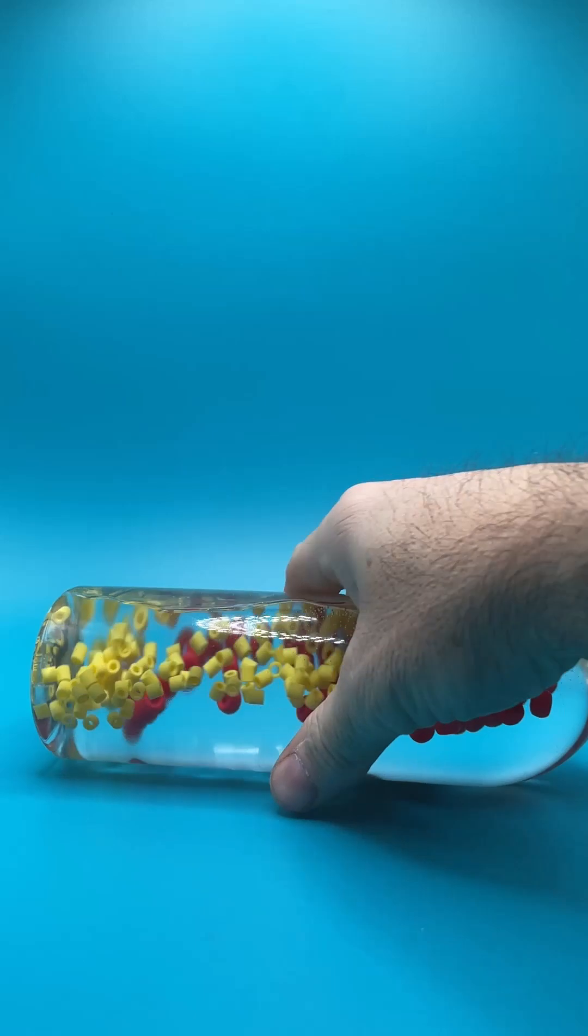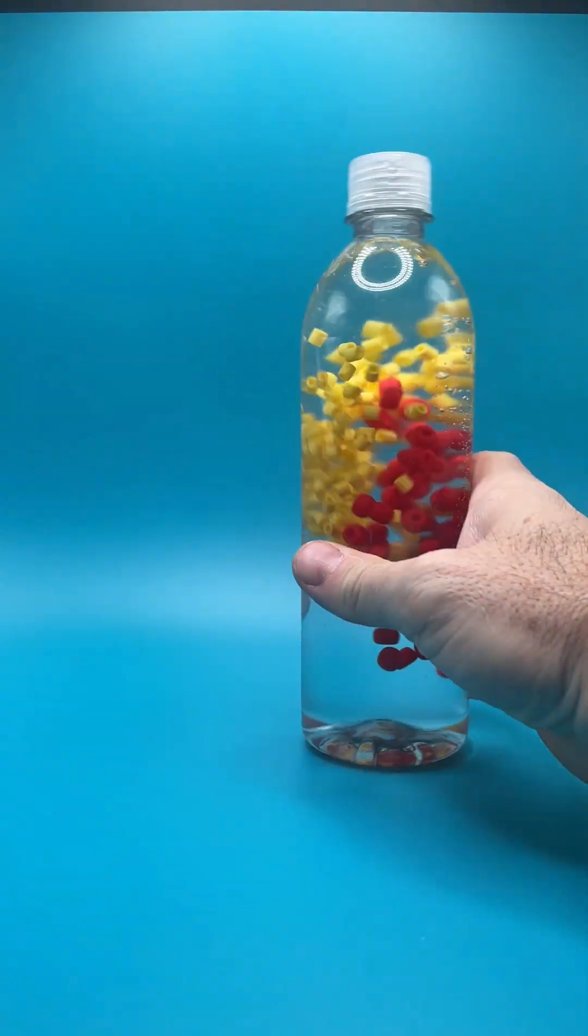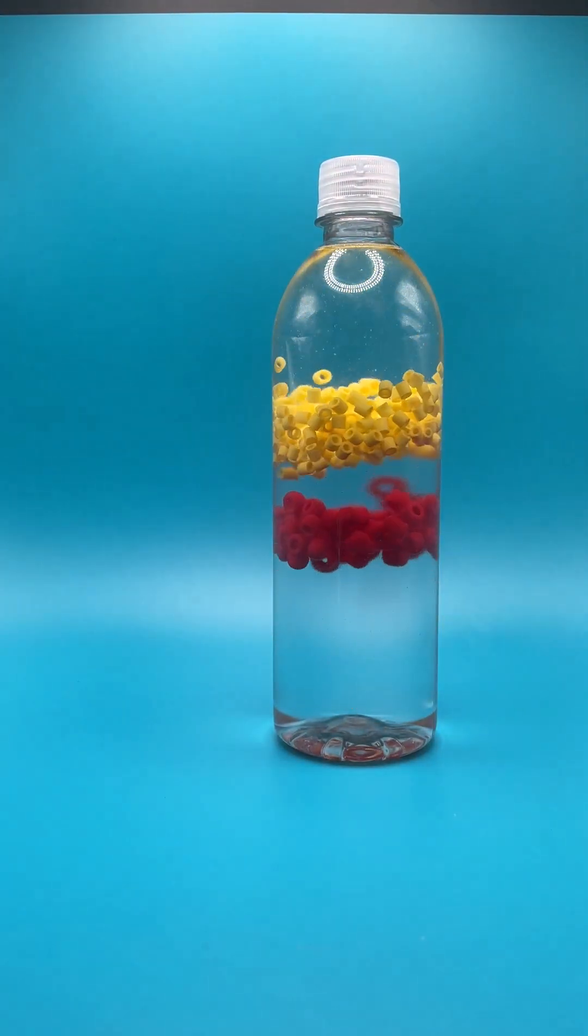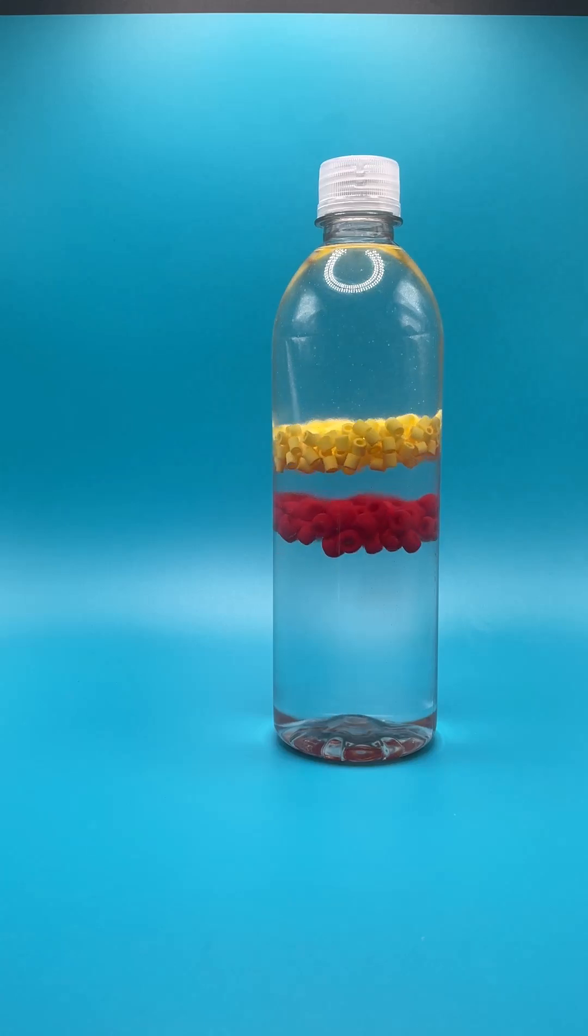Give the bottle a little shake and you'll separate the beads. The yellow beads group together at the top and the red beads are at the bottom. Both groups of beads will again start slowly merging until they meet again at the center of the bottle.